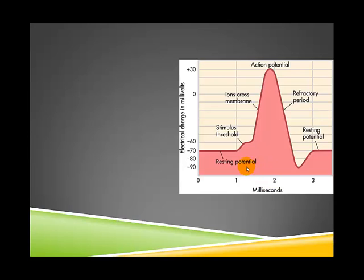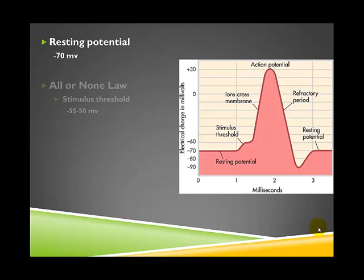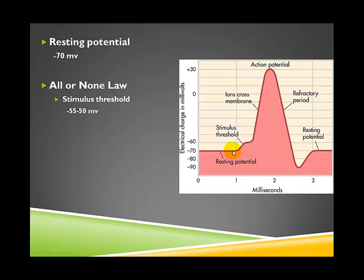Looking at this graph, as I mentioned earlier, your brain has a slight negative electrical charge to it. When a neuron is at rest — not receiving any information and not communicating — it has a resting potential of negative 70 millivolts. But when it receives excitation or stimulation from the environment, those channels start to slowly open up and more positively charged ions come in, bringing up the electrical charge of the neuron. When a neuron receives just enough excitation to push it up into the negative 55 to negative 50 millivolt range, we say it has achieved stimulus threshold — and that neuron will fire.